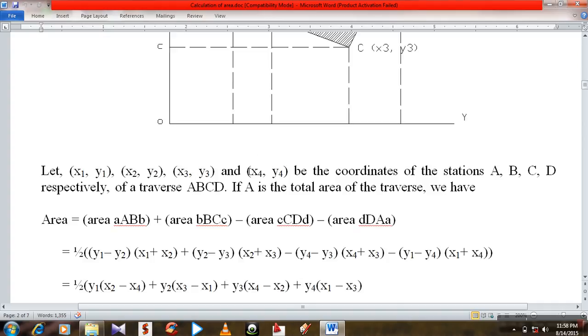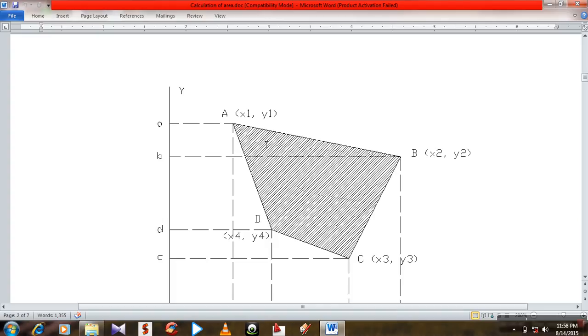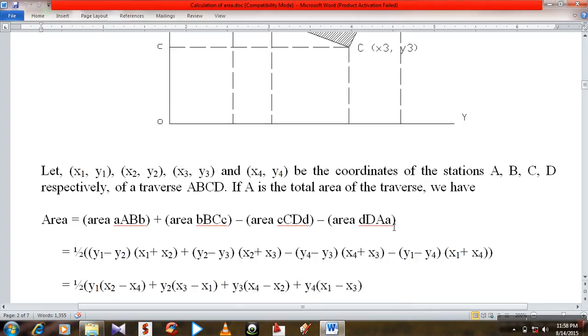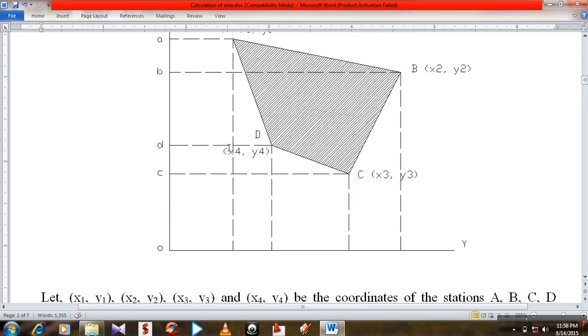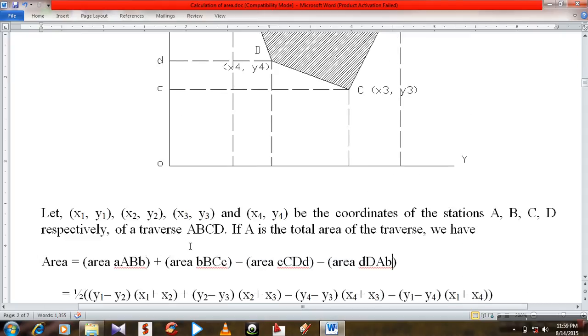Let me discuss on it. First one is AABB and second one is BBC. Now, already included, minus DDCC minus AADB.